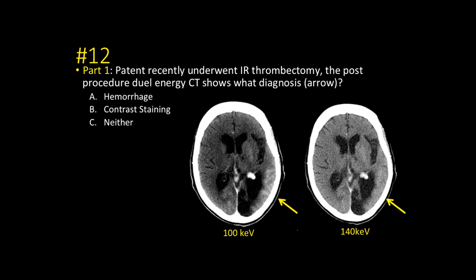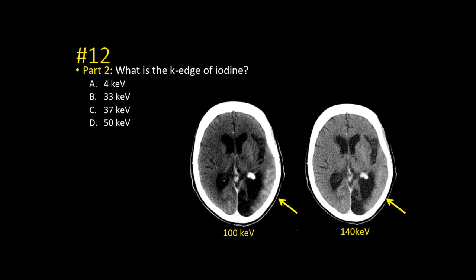Number twelve, part one: the patient recently underwent IR thrombectomy for stroke. On the post-procedure dual energy CT, the finding depicted by the arrow in the posterior left MCA territory is contrast staining. On the 100 keV scan, attenuation is higher because iodine's K-edge is lower and closer to 100 keV, making it look brighter on the lower-energy scan. Part two: the K-edge of iodine is 33 keV. Calcium is 4, barium is 37, and gadolinium is 50.